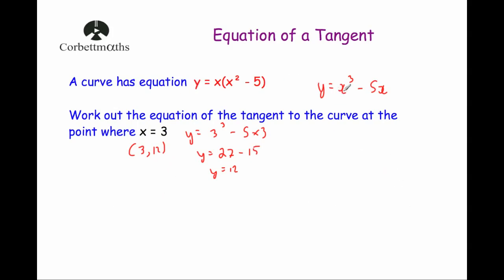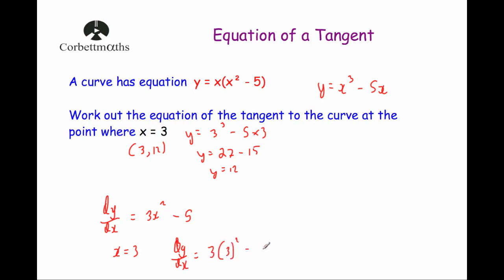So we're looking for the equation of the tangent at the point (3, 12). We've got the curve y equals x cubed minus 5x, so we want to find the gradient function dy by dx. Differentiating: bring the 3 down gives 3x squared, and differentiating minus 5x gives minus 5. So dy by dx equals 3x squared minus 5. Now substituting x equals 3: 3 times 3 squared minus 5. Order of operations: 3 squared is 9, times 3 is 27, take away 5 equals 22. So the gradient of the tangent at x equals 3 is 22.